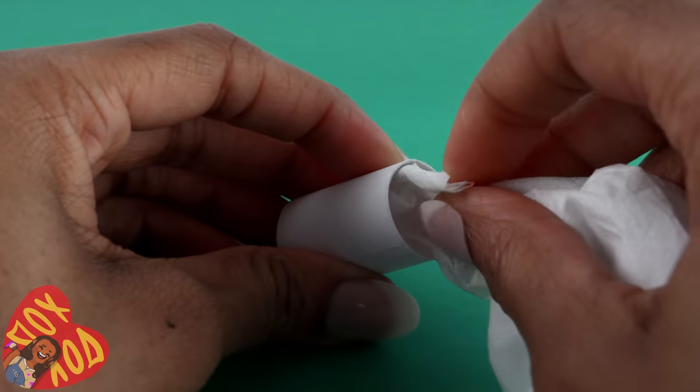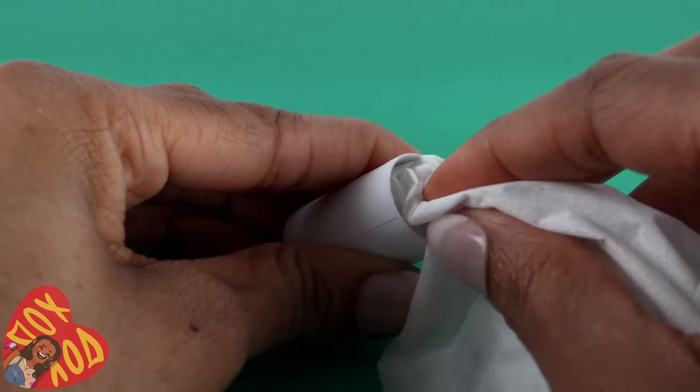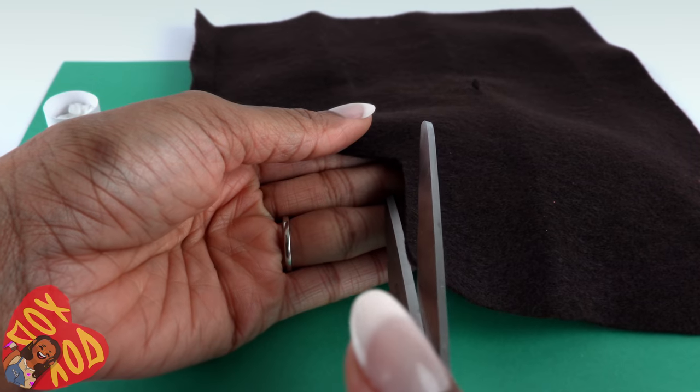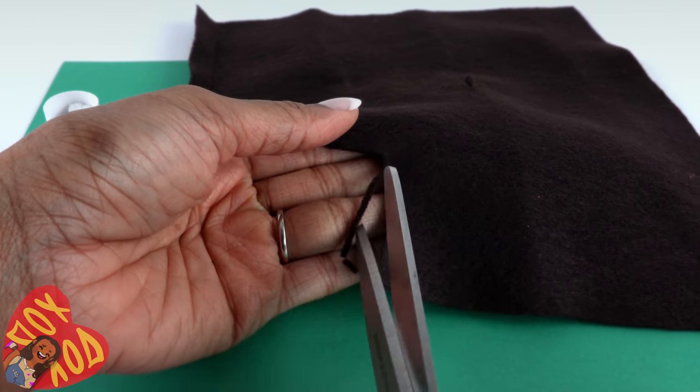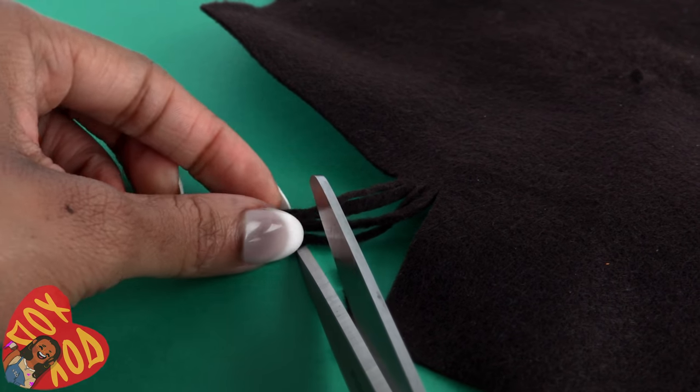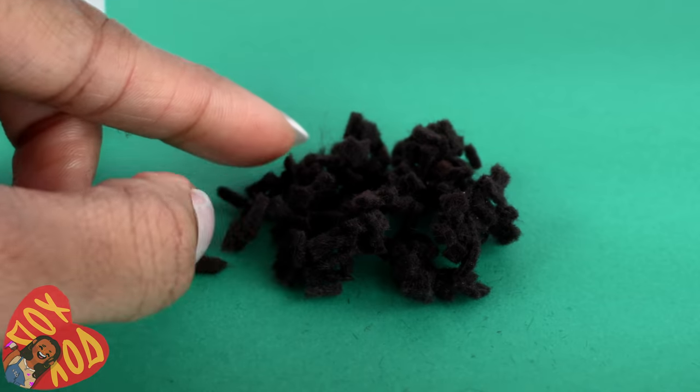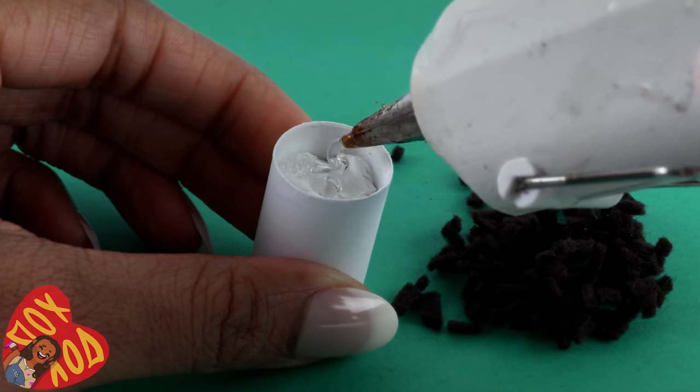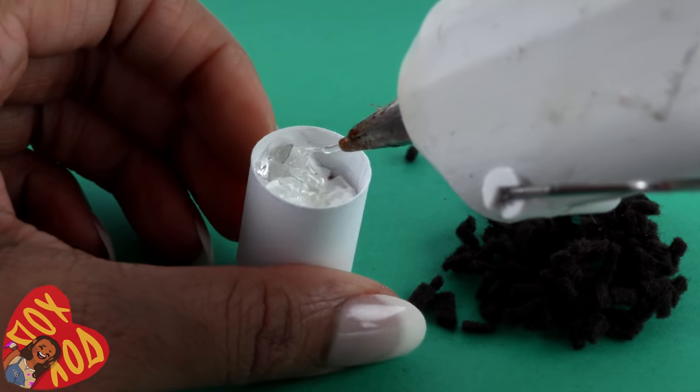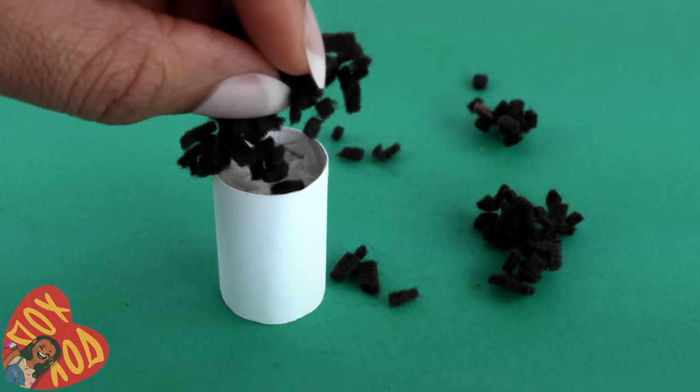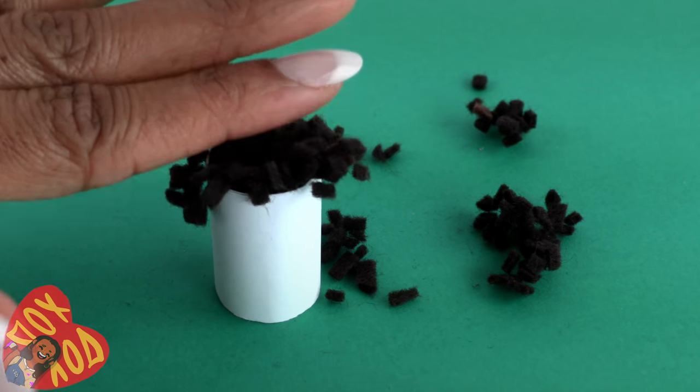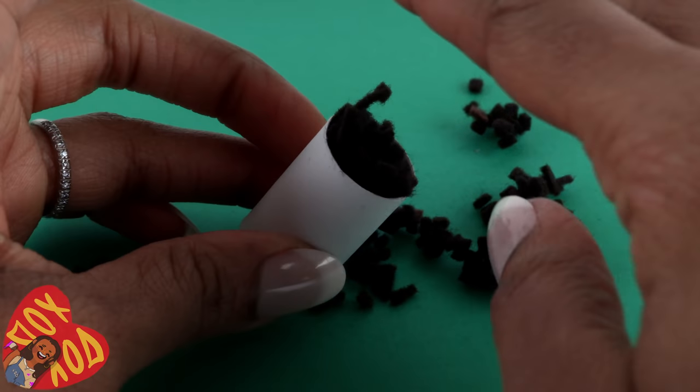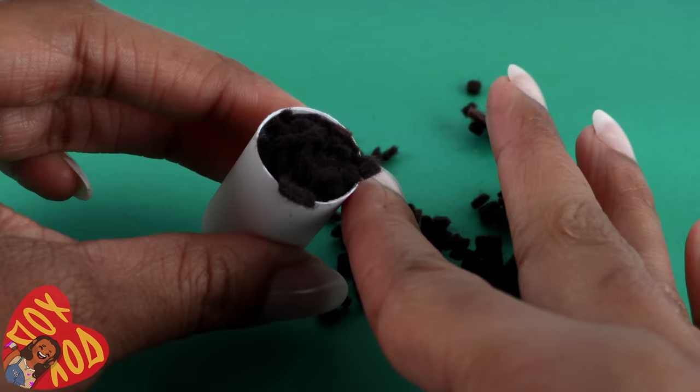Take some tissue and push it inside. I'm using the end of a chopstick to pack it down. Take dark brown felt and cut it into strips, then cut the strips into tiny squares to make soil for our pot. Cover the tissue with hot glue making sure you get it onto the sides. Add the felt on top. Be very careful not to get burned. I always use a little bit more felt than I need just to give myself a buffer.